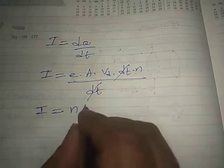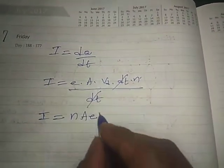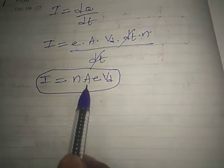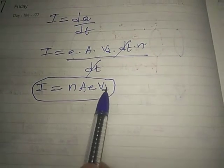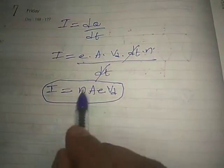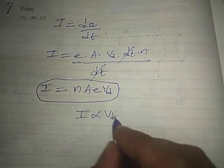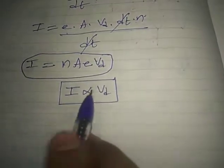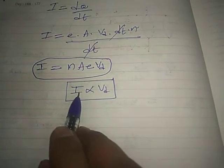Current I = dq/dt. Substituting dq = e × A × vd × dt × n, and cancelling dt, we get I = nAeVd. Here N is the number of free electrons per unit volume, A is the area of cross section, e is the charge of the electron, and VD is the drift velocity. Since NAe is constant, I is directly proportional to VD — if drift velocity is large, the current is also large.